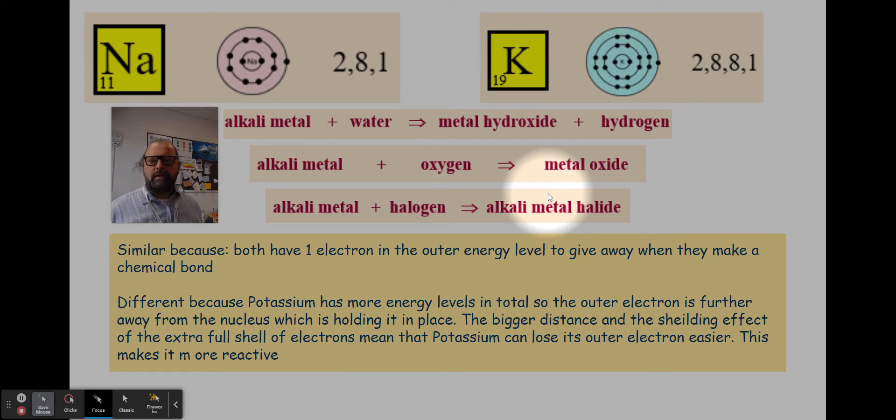So we know that all of these elements, and the same thing would apply to any group. All of group one do similar chemistry. Group two do similar chemistry to each other. Group three do similar chemistry to each other and so on. And that's all to do with the fact that they've got the same number of electrons in their outer energy level.